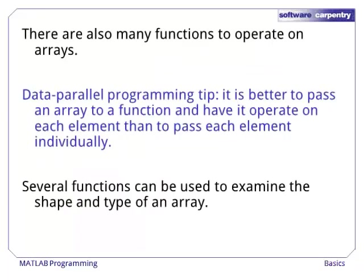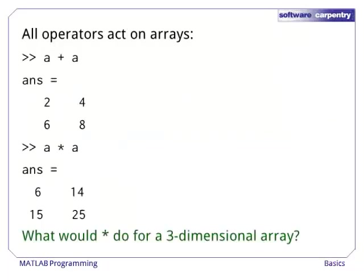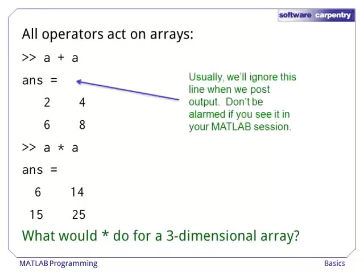In a later episode, we will talk about how to program your own functions. But for now, let's explore some of the built-in functions to examine the shape and type of an array. The simplest functions are arithmetic operators, which operate on arrays in the way you would expect from matrices and vectors. Addition is element-wise, and assumes that the two arrays have the same size. Multiplication is matrix multiplication, and assumes that the inner dimensions agree. As an exercise, see if you can figure out what happens when you multiply two three-dimensional arrays.